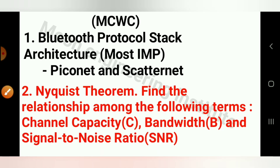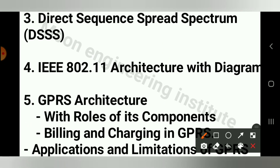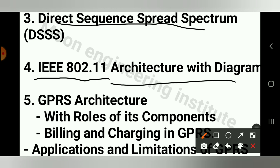Next, question number 3 is DSSS — Direct Sequence Spread Spectrum. Question number 4 is IEEE 802.11 Architecture with Diagram — you need to explain it with a diagram.